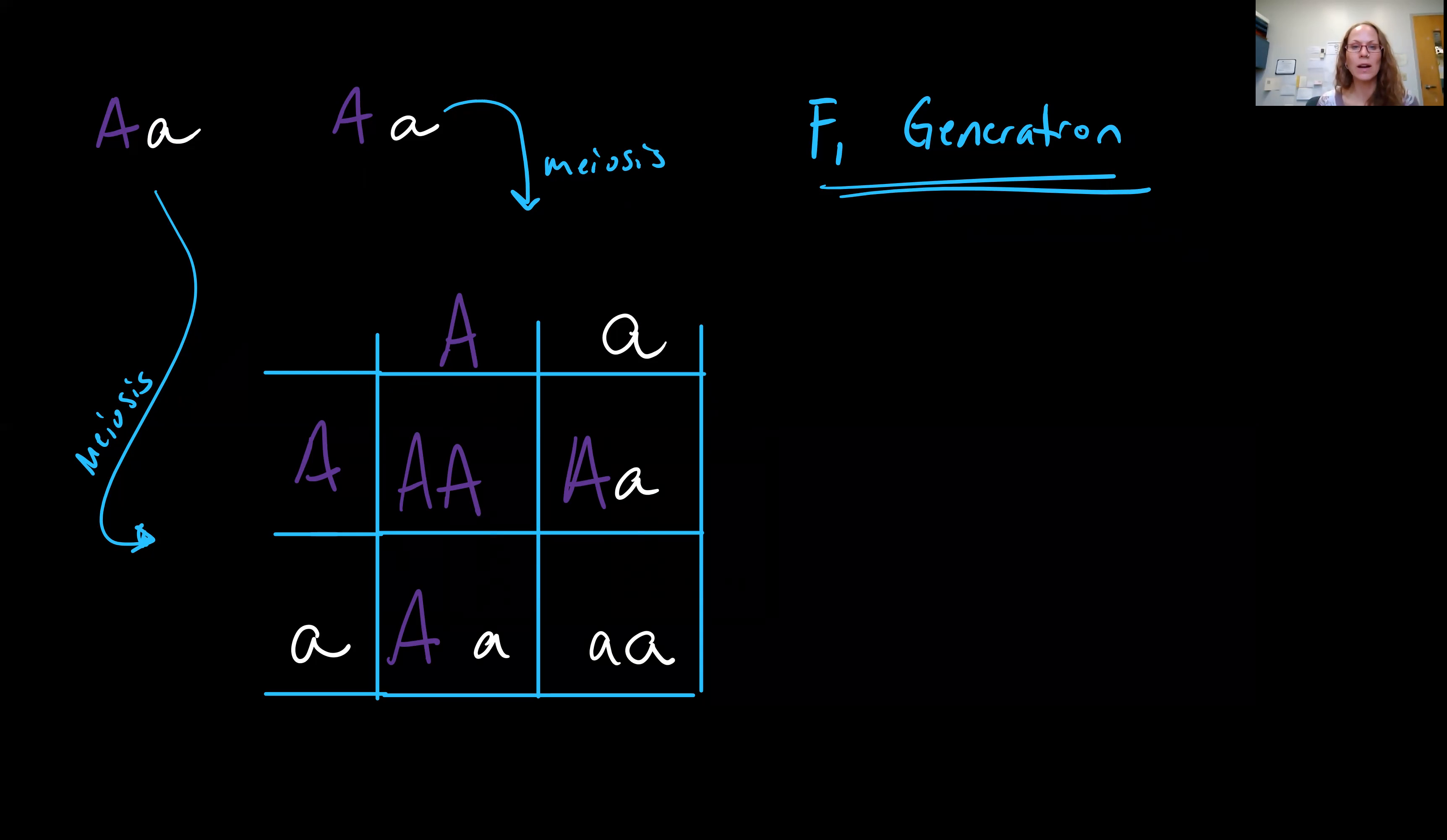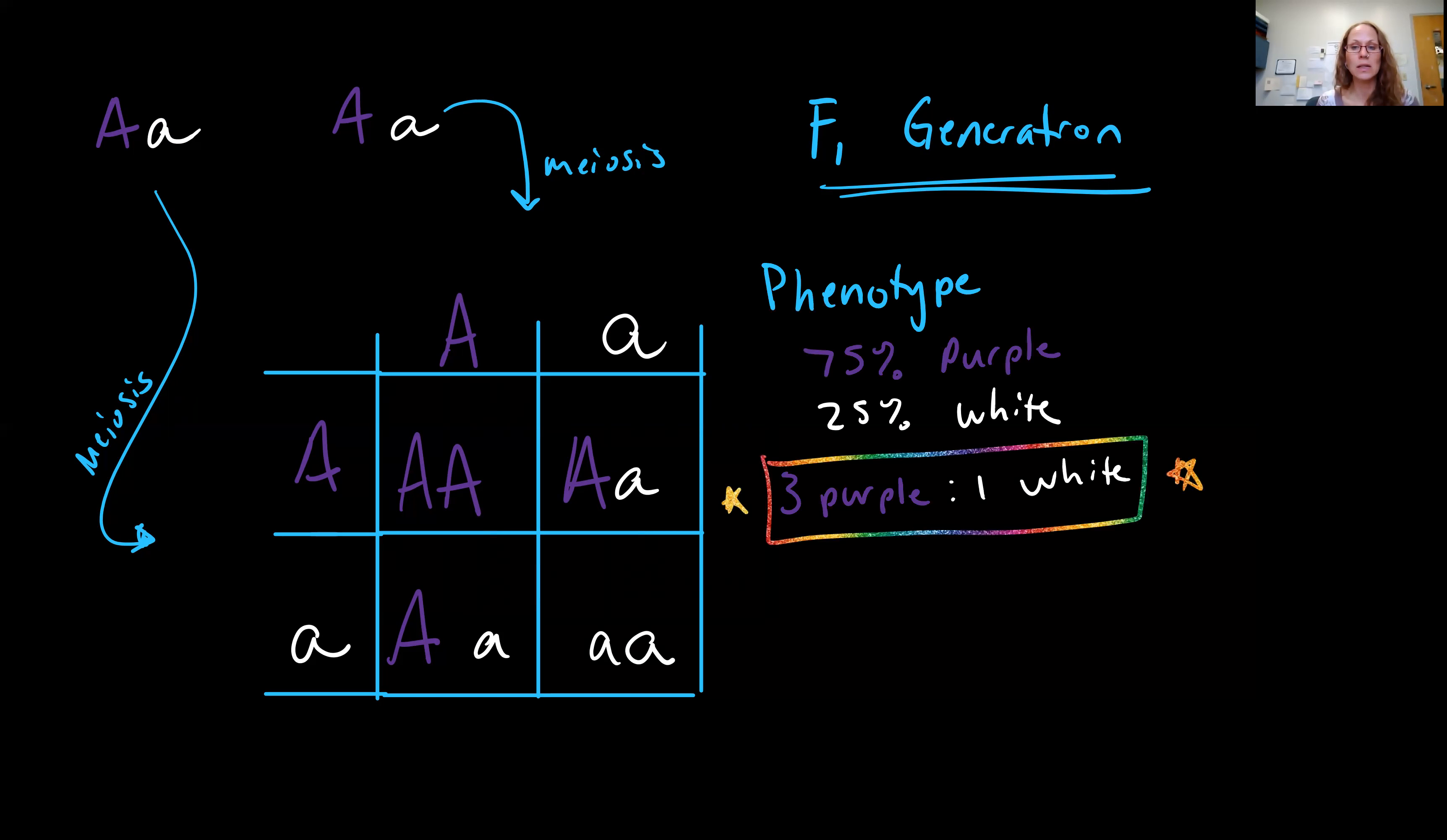So, now, let's see if we can figure out our phenotypic and genotypic ratios or percentages. Phenotype, remember, is physical expression. So, we should see three that are purple and one that's white. Three out of four, or 75%, of the offspring will have purple flowers. One out of four, or 25%, of the offspring will be white.